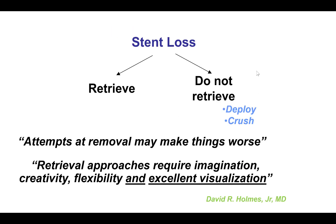What to do next? Overall, for stent loss, there are two key approaches. One is to try to get the stent out. The second is to leave the stent where it is and instead deploy it or crush it with another stent. Sometimes the approach of not retrieving but just leaving it in place and deploying or crushing may actually be the better one.